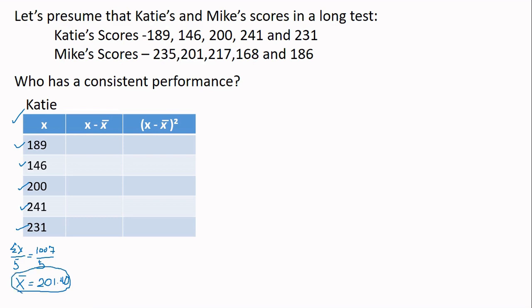Next is to solve the x minus x̄ mean. I'll just show this, class. But the important thing is you get the concept that the value here in x, you subtract it from the mean. So this will give us negative 12.40, next is negative 55.40, negative 1.40. So we've solved the second column. Now let's proceed to the third column and square it.